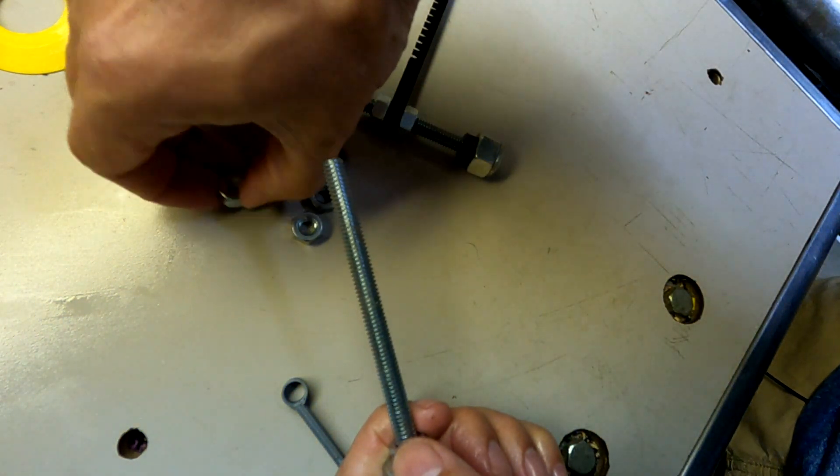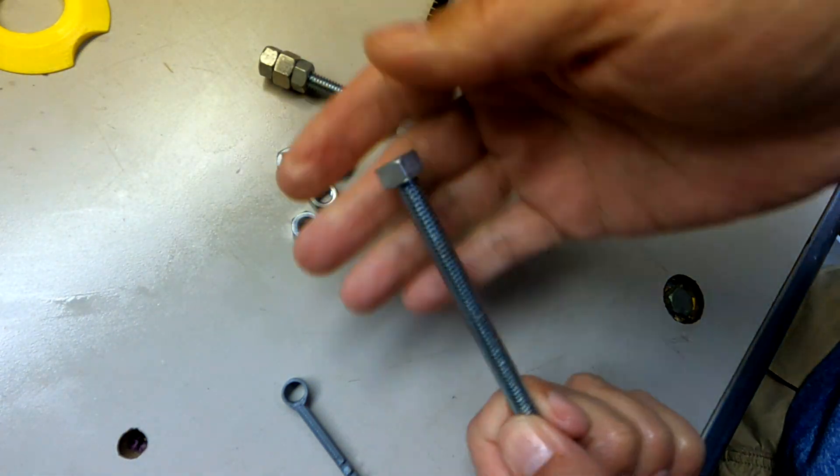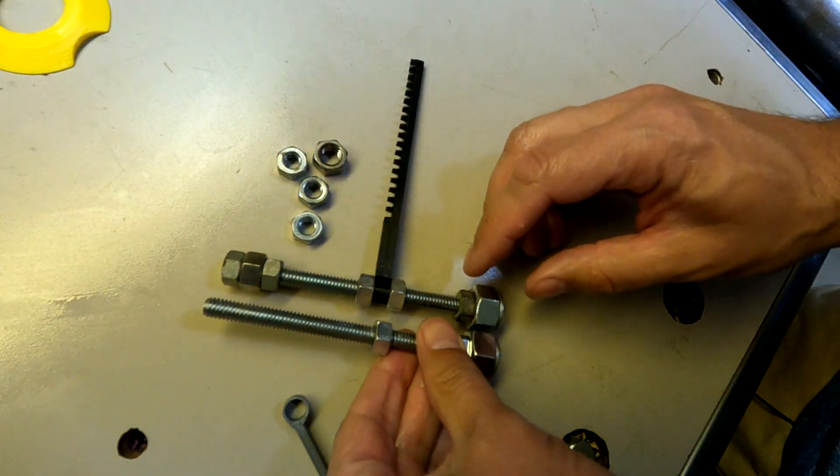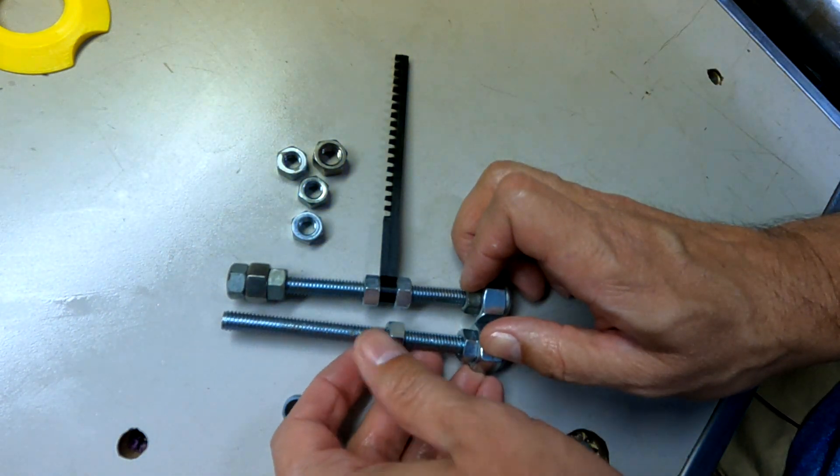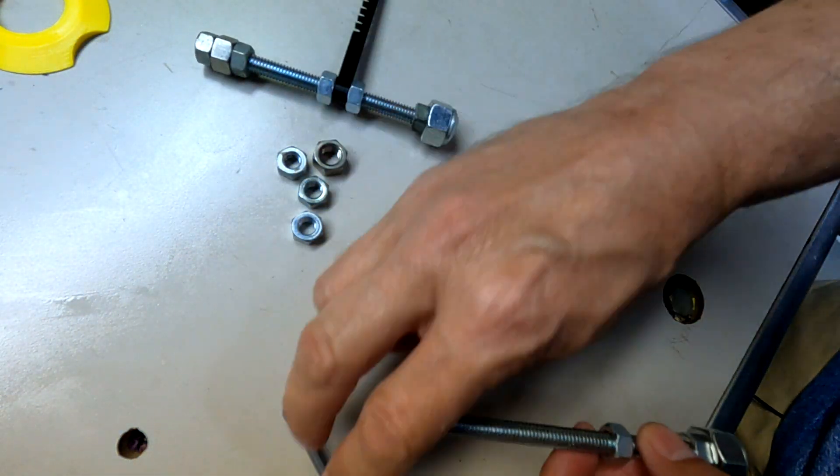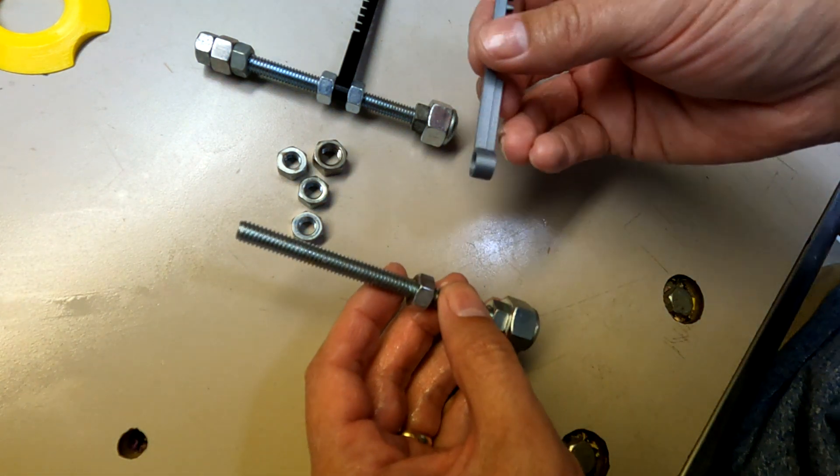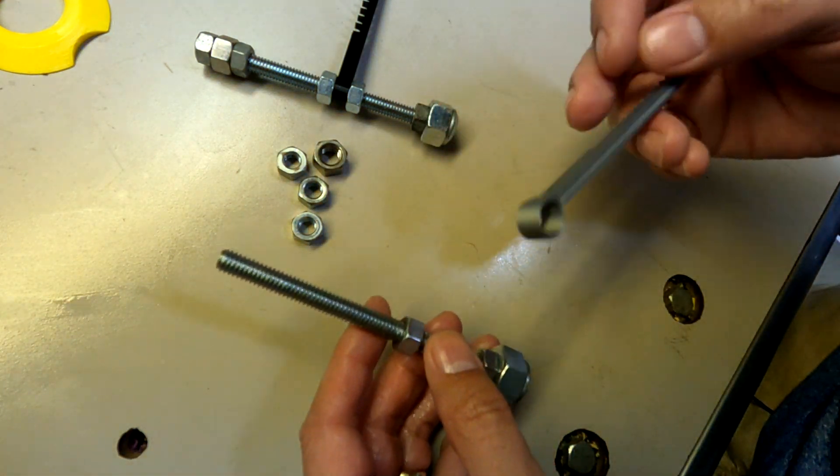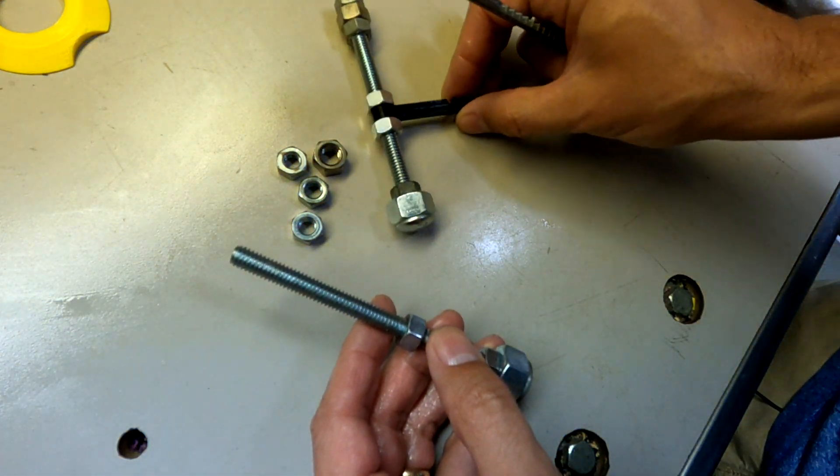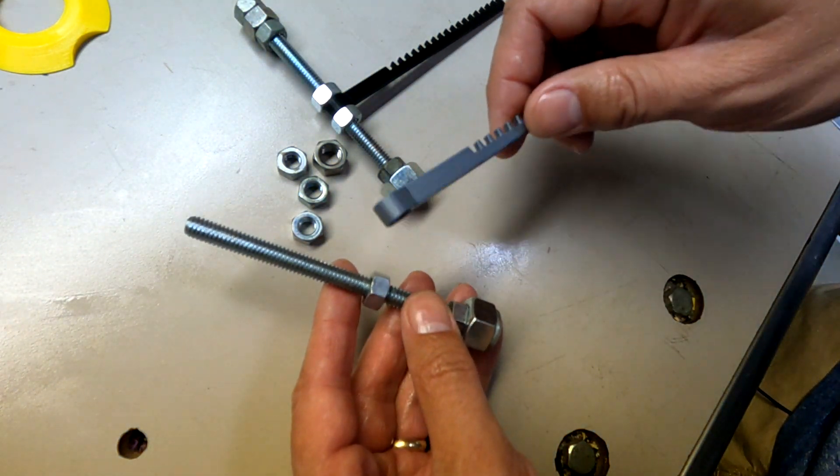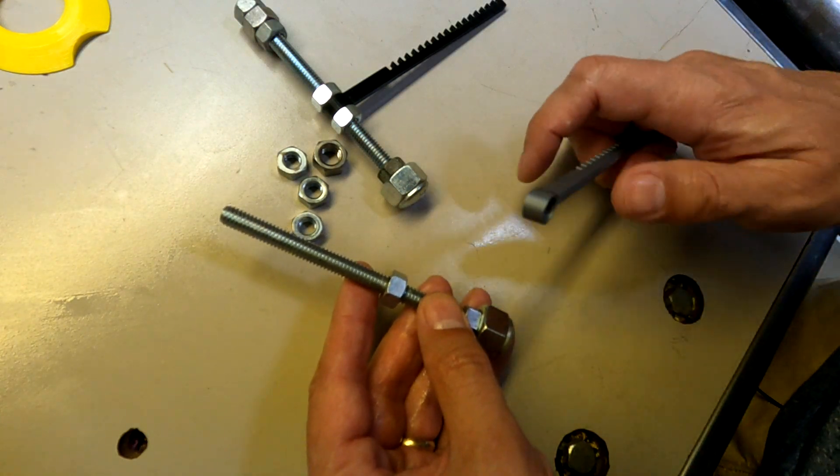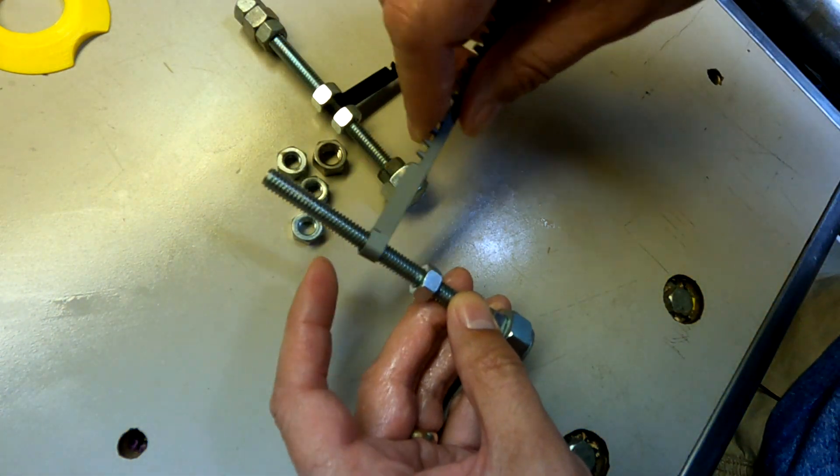Then we put on another five sixteenths nut. And I'm going to use this other one that I've already assembled to get the nut position in the right spot. And then we take our rack and put it on. And when you put this rack on, you need to put it on here so that the teeth face away from the head of this bolt. Like that.